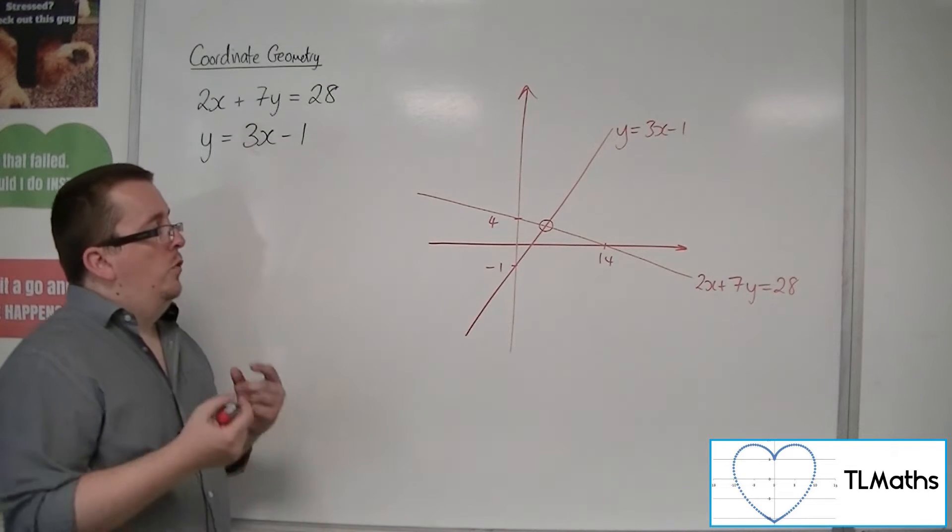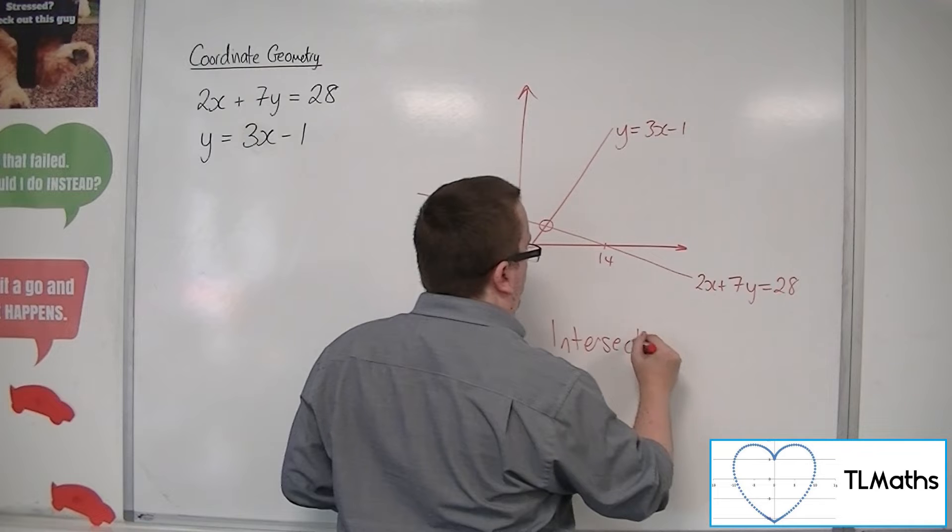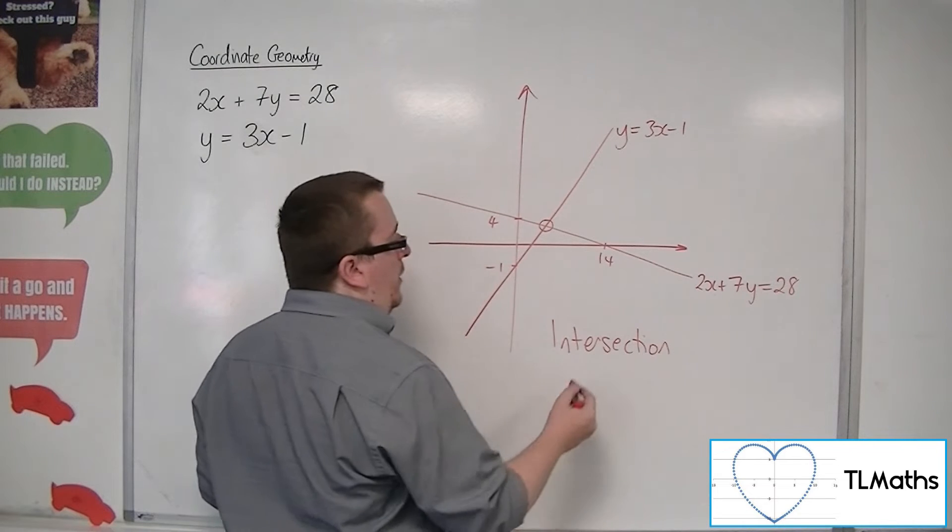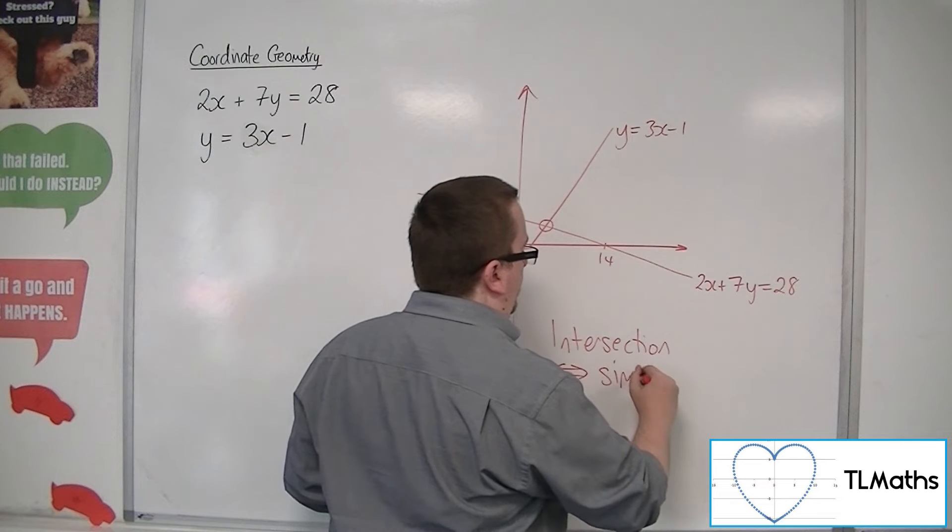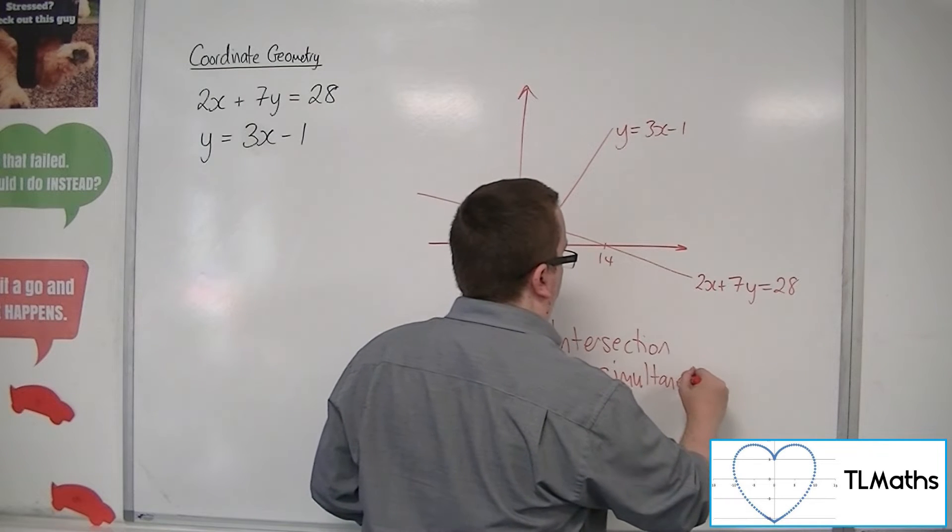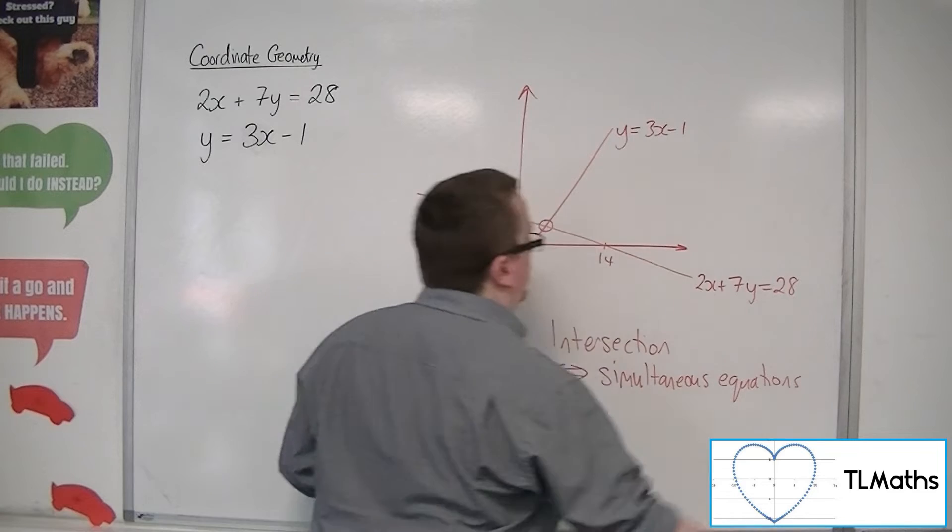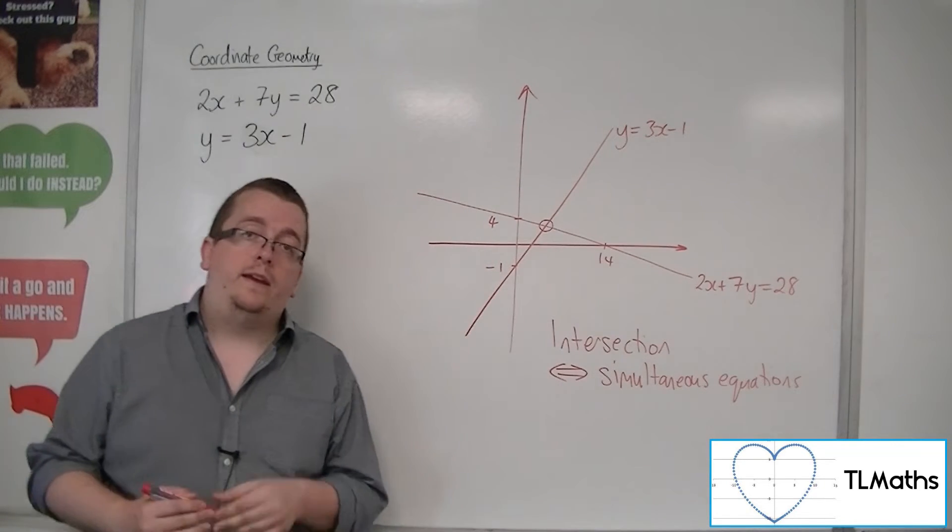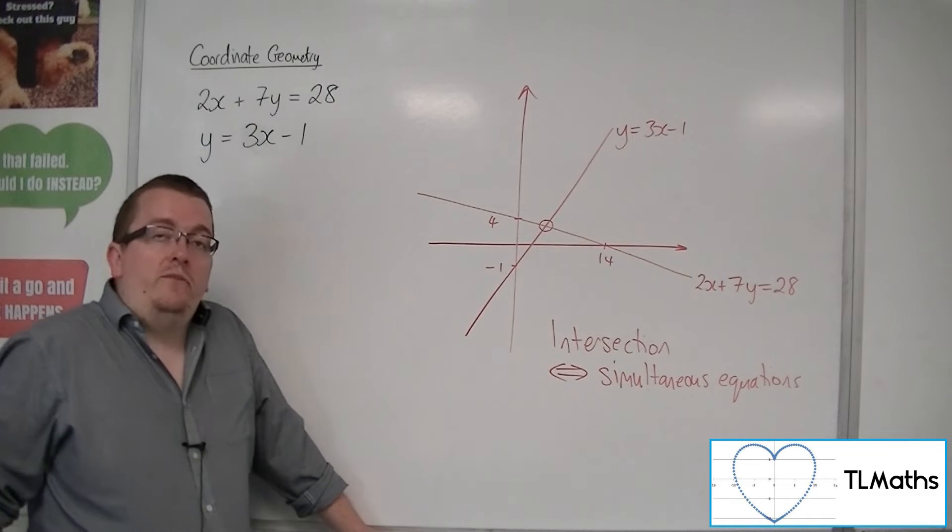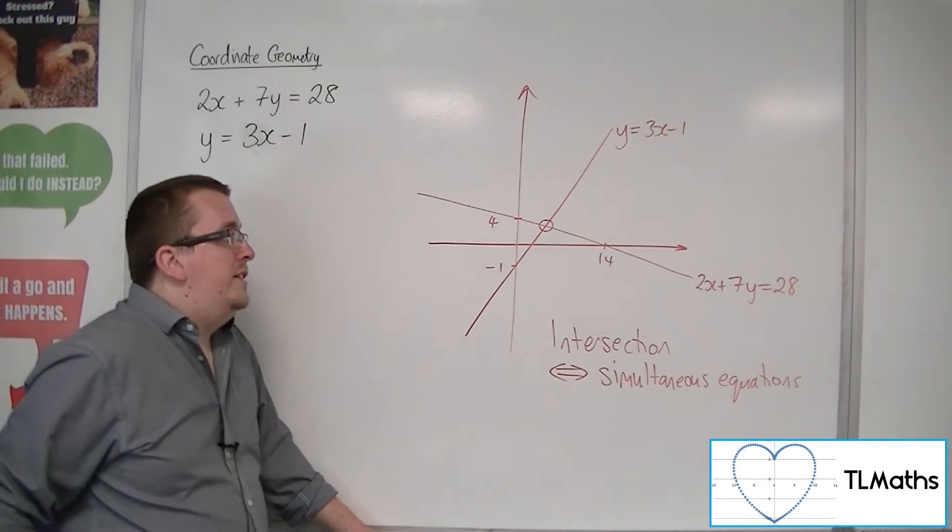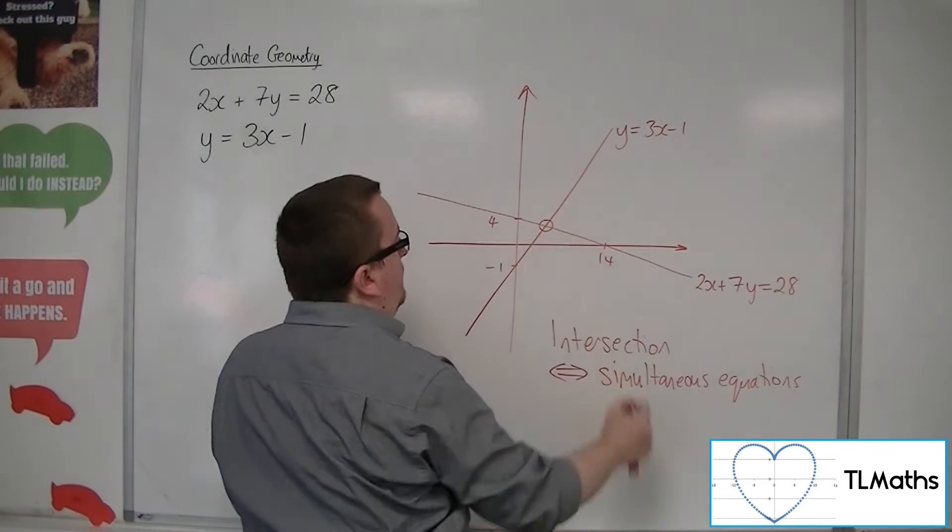The word intersection, whenever you're asked to find the intersection of two graphs, should always throw up into your mind simultaneous equations. Because it is through solving equations simultaneously that we find the same values of x and the same values of y that are required. So that when the lines are equal, they both have the same x, they both have the same y.